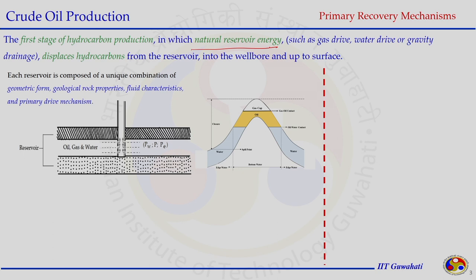Crude oil production by primary recovery mechanism is the first stage of hydrocarbon production. Both oil and gas get produced because of the natural energy present in the reservoir. The overburden pressure causes reservoir fluids to be produced, and as production happens the pressure declines. Understanding primary recovery helps us decide secondary and tertiary recovery mechanisms, improving oil and gas production from the reservoir formation.